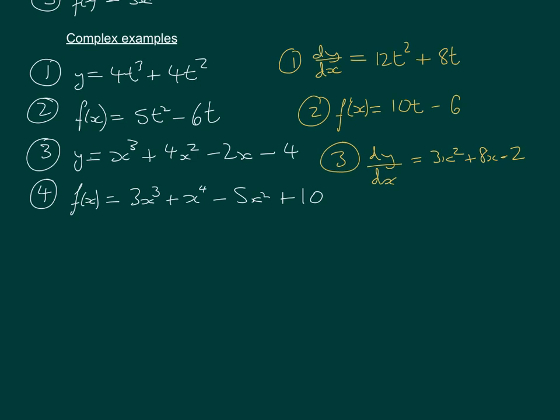And let's do the final one, number 4. It's f(x) notation, so f dash x. And that will give us 9x squared plus 4x cubed minus 10x. And that plus 10 is not included because it hasn't got a variable on it.